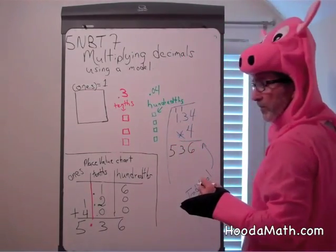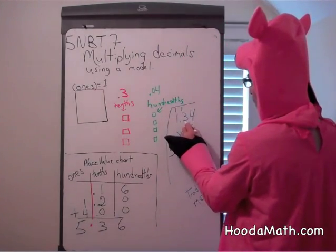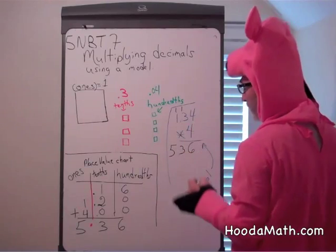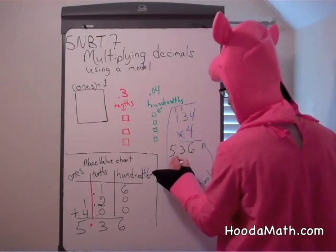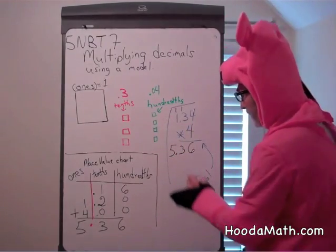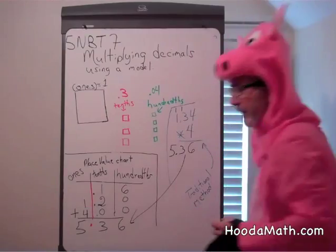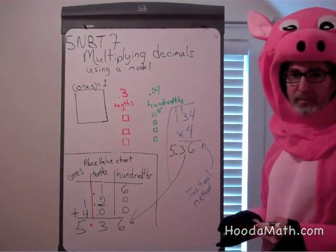We count the decimal places: one, two to the right of the decimal, and we have two here. These answers are the same.